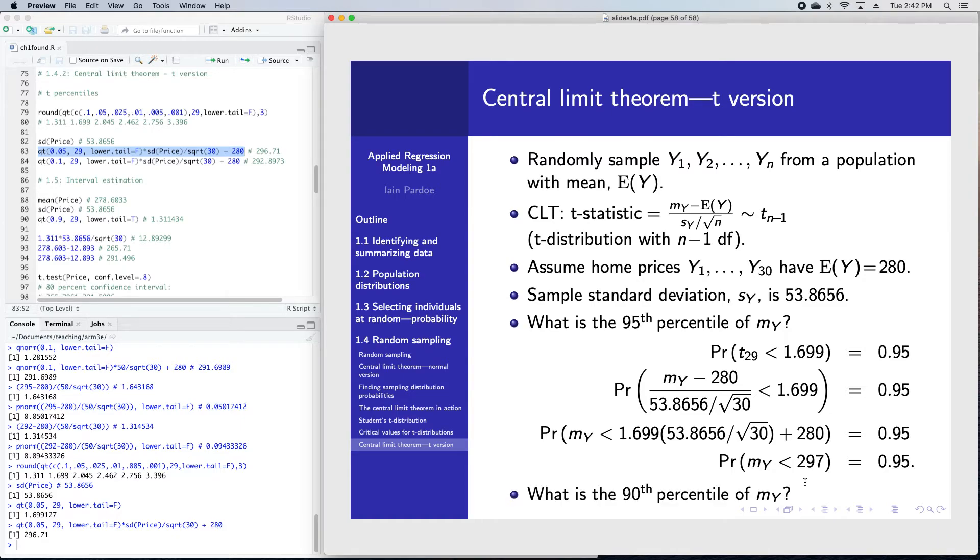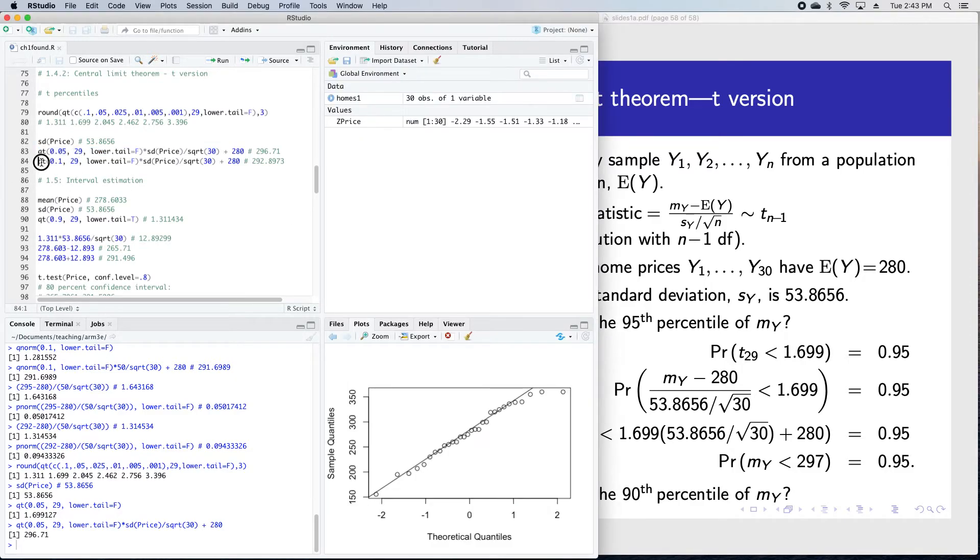I'll finish by running through one last example. Let's suppose instead of the 95th percentile we wanted the 90th percentile. What would change? The only thing that would change here would be this number, the 1.699. Instead it would be 1.311434. That's the 90th percentile.